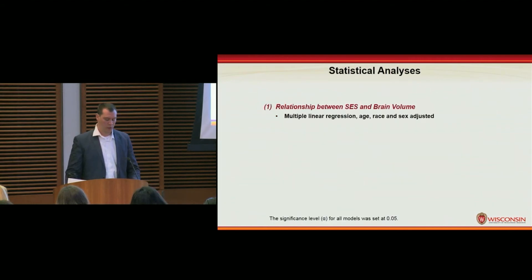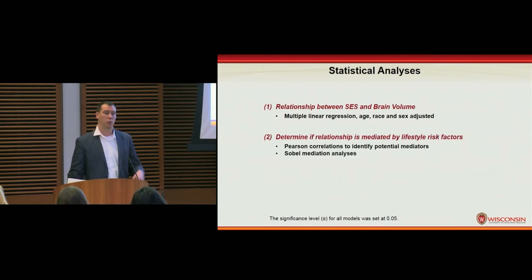Examining our first aim, which was the relationship between SES and brain volume, we used multiple linear regression while adjusting for age, race, and sex. If our hypothesis was supported, we then sought to determine whether this relationship is mediated by lifestyle risk factors. We used Pearson correlations to identify potential mediators, and then proceeded with Sobel mediation analyses.